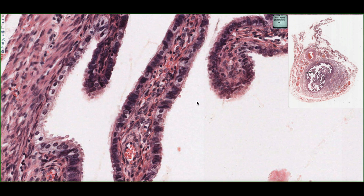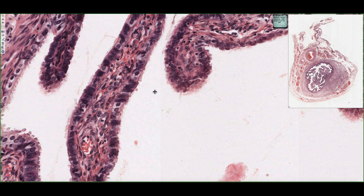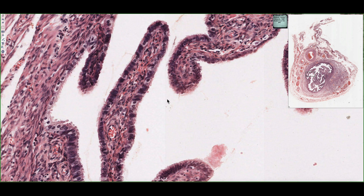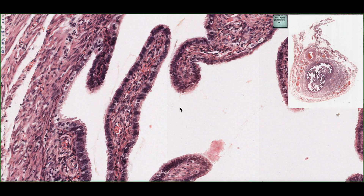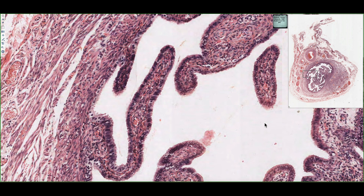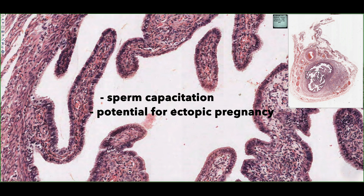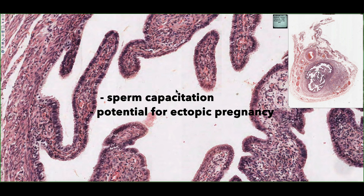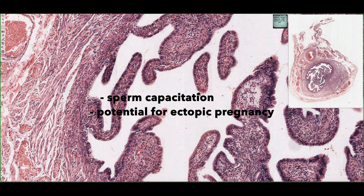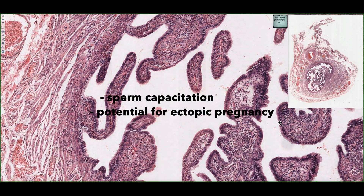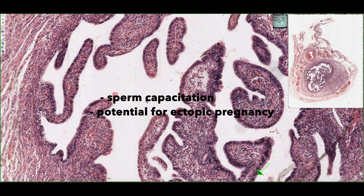The ampulla region is important because it is the site of fertilization, where sperm actually fertilizes the egg. The oviduct in general is also important because this is where the process of capacitation occurs, in which sperm traveling through the oviduct gain the ability to fertilize the egg. Clinically, the oviduct is significant because approximately 98% of ectopic pregnancies occur within the oviduct.